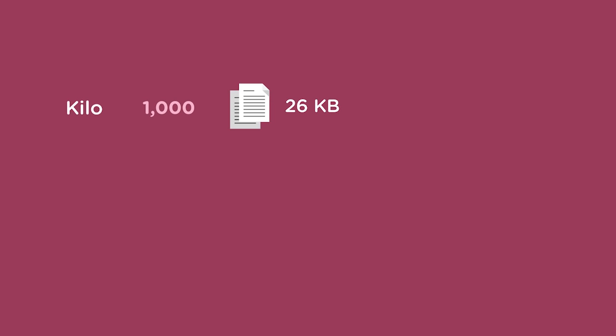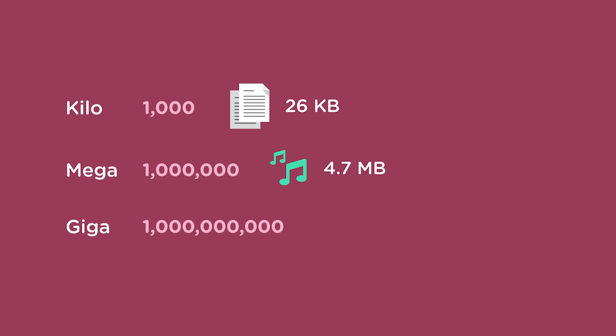Mega means one million, or one followed by six zeros. My favorite song, stored on a portable music player, is 4.7 megabytes. Giga means one billion, or one followed by nine zeros. The DVD of Hidden Figures is 39.26 gigabytes.